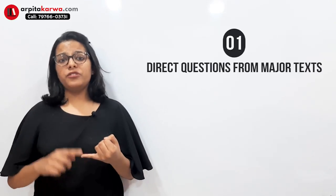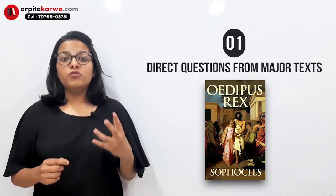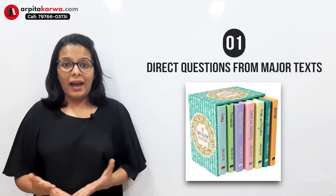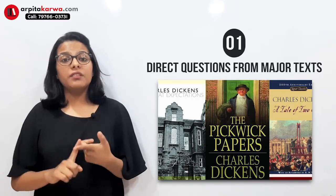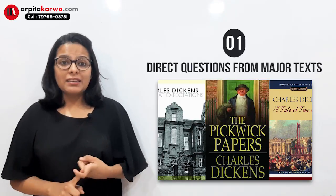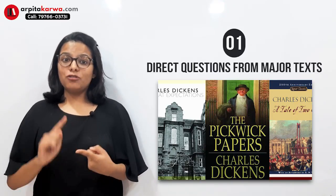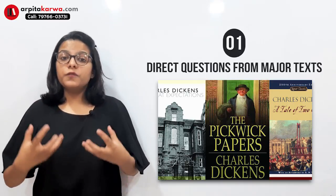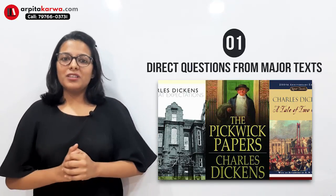One question was from Oedipus Rex — they asked about the opening scene. Another question was from Jane Austen's work, asking which of the following is the unfinished novel by Jane Austen. Another question was from Charles Dickens — they asked about characters, specifically Miss Havisham and Agnes. I specifically mentioned in the crash course that you cannot skip Great Expectations, David Copperfield, and Oliver Twist, because very specific questions can be asked from these works.